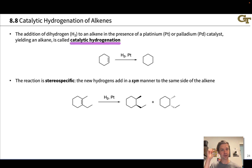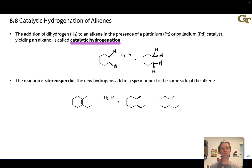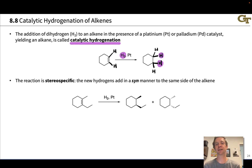For example, if we draw in the implied hydrogens, we've got two implied hydrogens on the alkene carbons in cyclohexene, and in the product cyclohexane we have four. So the elements of dihydrogen have added to the alkene to produce an alkane.